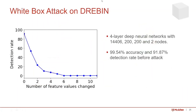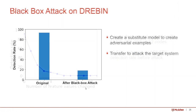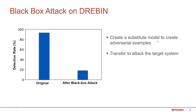We conducted a white box attack on this dataset. The deep neural network is 4 layers, and the original detection rate is 91%. After adding two API calls, the detection rate dropped to 20% — a very significant drop. We also conducted a black box attack using a substitute model, which is a 5-layer neural network, to create adversarial examples. The detection rate also dropped after the black box attack, showing the transferability of this type of attack.